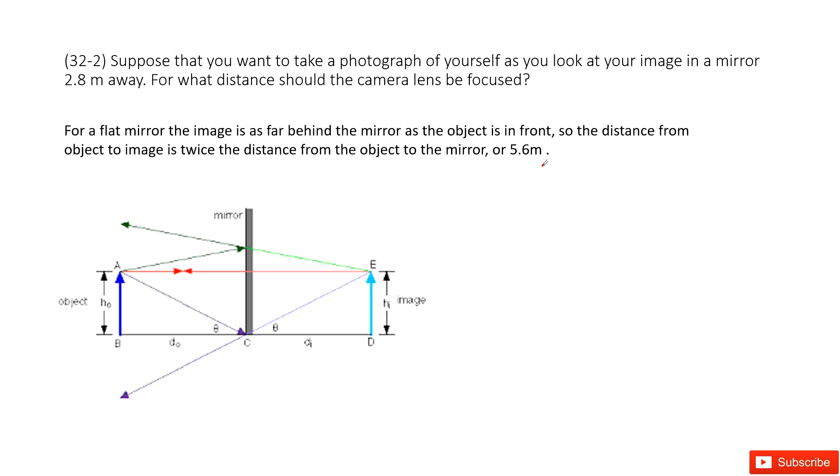Chapter 32 is about light and reflection. Suppose that you want to take a photograph of yourself as you look at your image in a mirror 2.8 meters away.